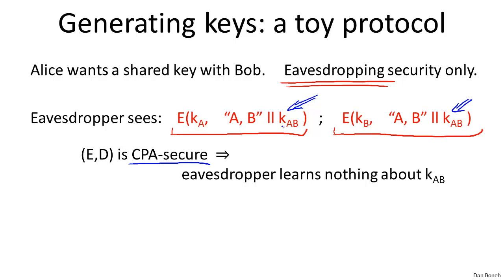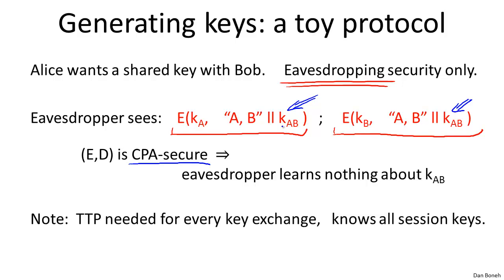The bottom line is that in this protocol the eavesdropper has no information about what K_AB is, so it's okay to use K_AB as a secret key between Alice and Bob. However, the TTP is needed for every single key exchange — Alice and Bob simply cannot do key exchange unless the TTP is online and available. Also, the TTP knows all the session keys, so if the TTP is corrupted or broken into, an attacker can steal all the secret keys exchanged between every user of the system. This is why it's called the trusted third party.